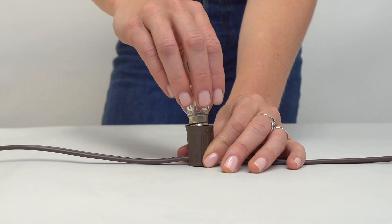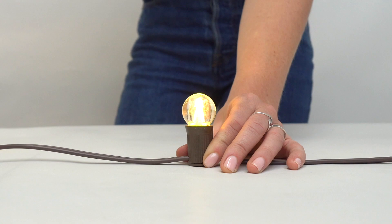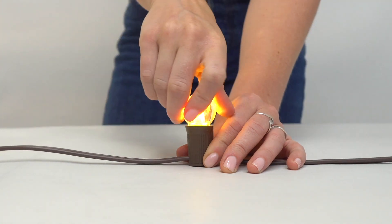Now test with the bulb. If your bulb does not come on, reapply the socket, making sure the copper prongs are biting into the wire.